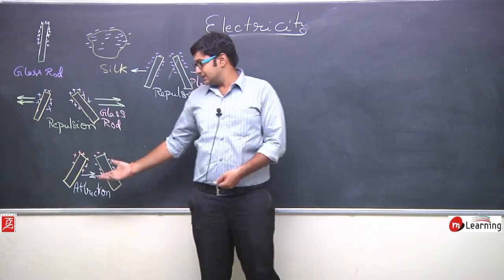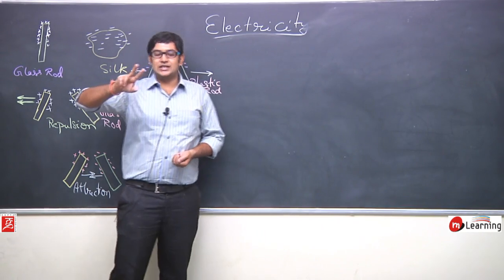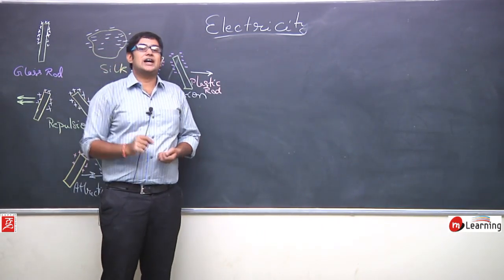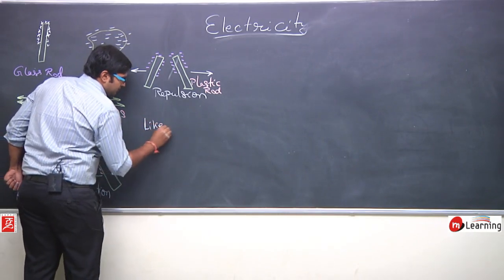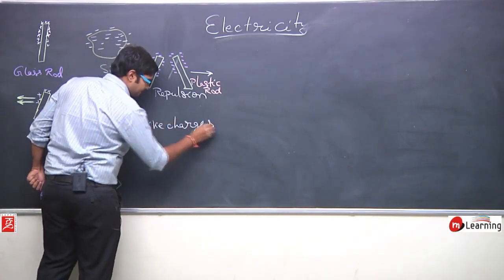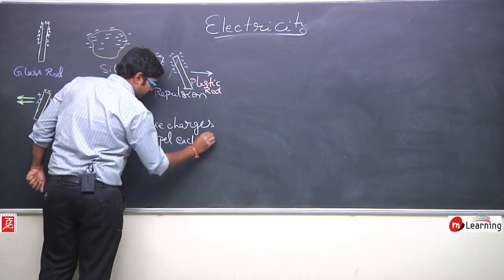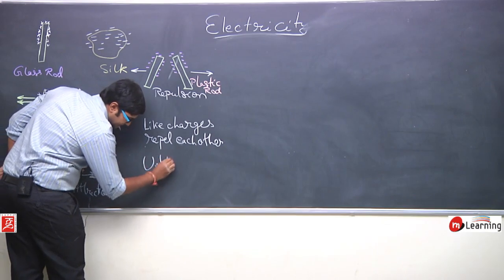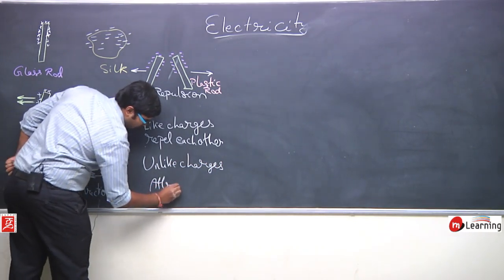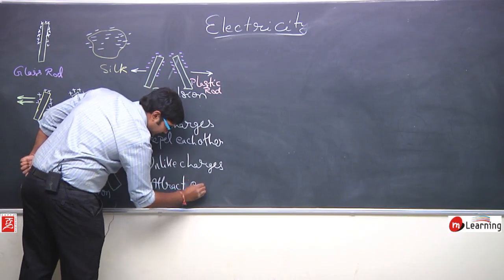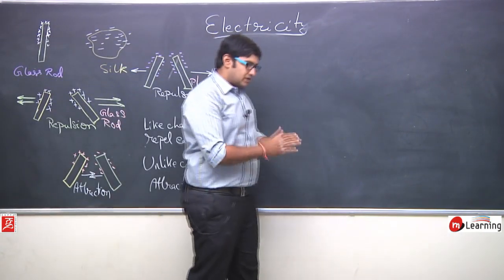Benjamin Franklin observed this phenomenon and on this basis gave the conclusion that the two types of charges — positive and negative — have a very special property: like charges repel each other and unlike charges attract each other.